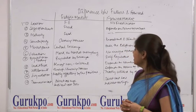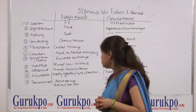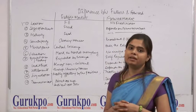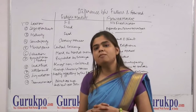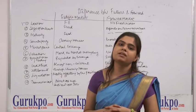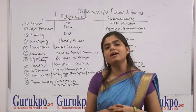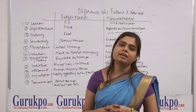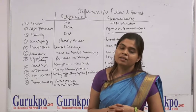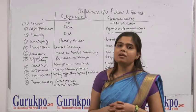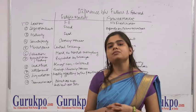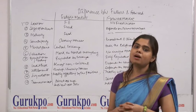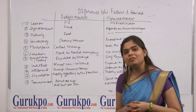The next difference is liquidation. In the futures market, most positions are offset — if you are in a buy position, it is offset by a sell position, and vice versa. There are very few actual deliveries in the futures market. In the forward market, contracts are settled by delivery.